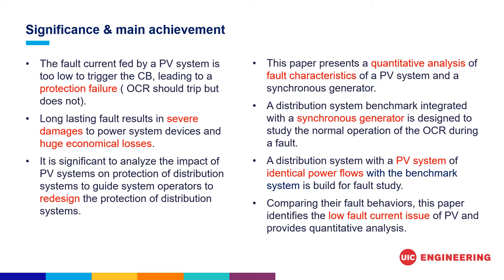To analyze this issue, this paper presents a quantitative analysis of fault characteristics of a PV system and a synchronous generator. A distribution system benchmark integrated with a synchronous generator is designed to study the normal operation of the overcurrent relay during the fault. We also build a distribution system with a PV system of identical power flows for fault study. Comparing their fault behaviors, this paper identifies the low fault current issue of PV and provides quantitative analysis.